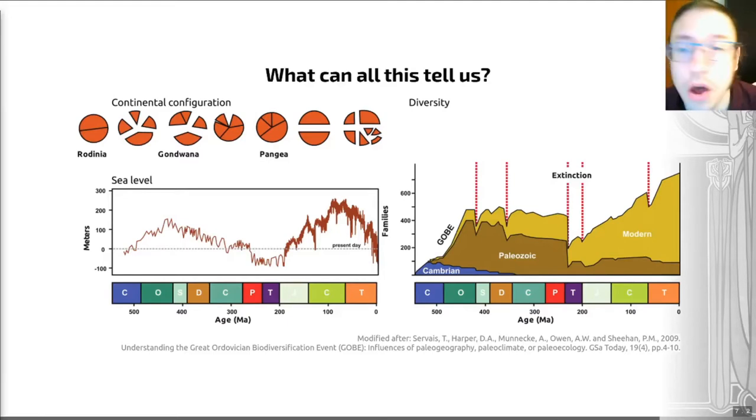I wanted to start by highlighting that everything is connected. There seem to be links as shown on this slide between sea level, the amount of continental shelf and the diversity of life. Here you can see the continental configuration for a series of periods from just over 500 million years ago through to today.